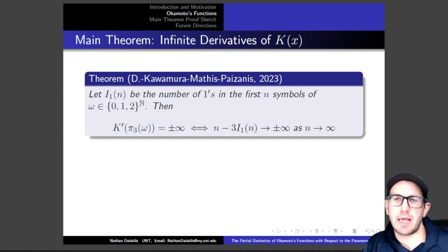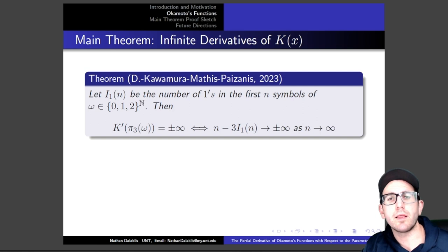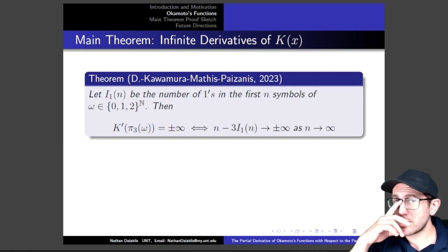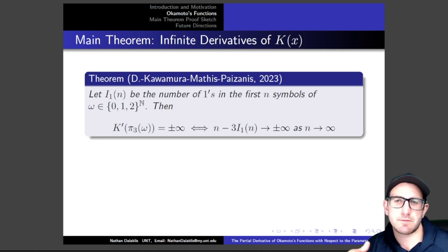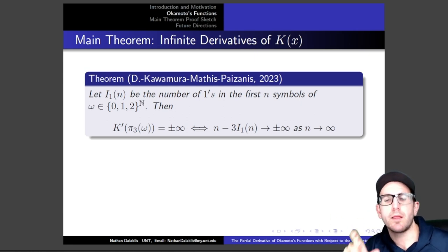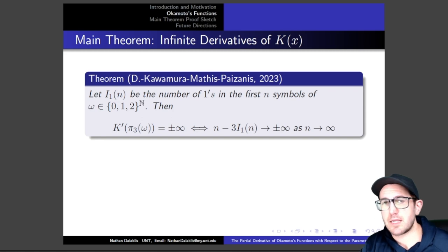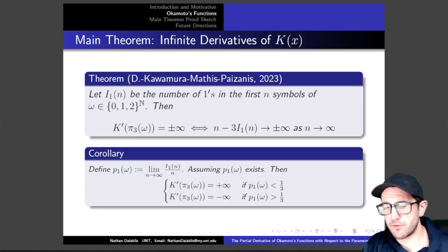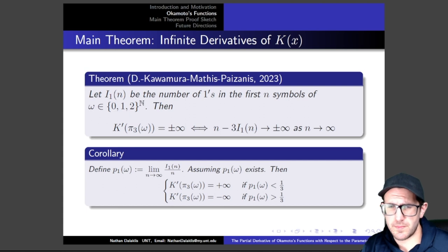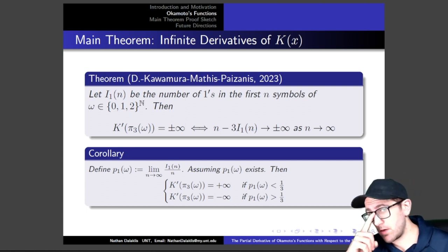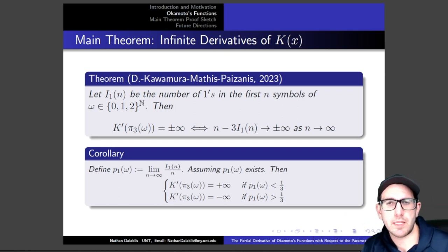We were able to classify them. If we let i₁(n) be the number of ones in the first n symbols of a symbolic point in the full 3-shift, then we can classify the infinite derivatives in terms of how the distribution of ones looks asymptotically for that particular point in symbolic space. As a corresponding result, you can also talk about this in terms of the asymptotic frequency of ones in that symbolic point, and say when the derivative is positive and when it is negative.